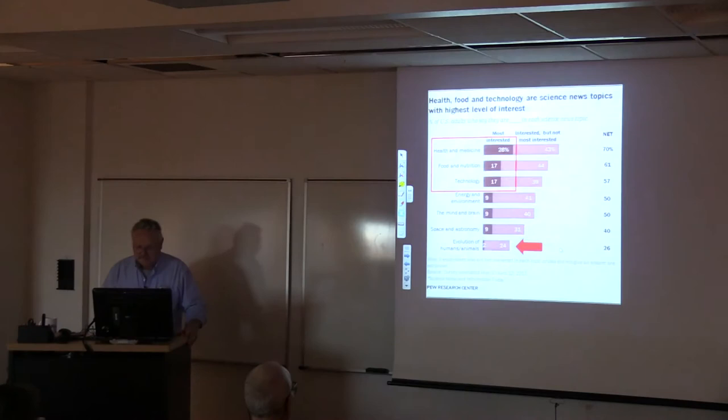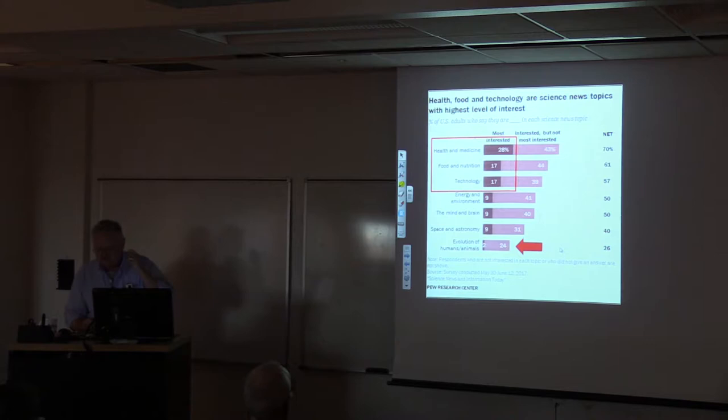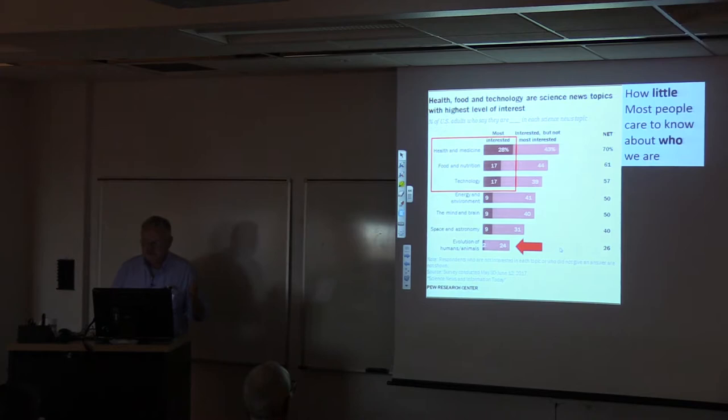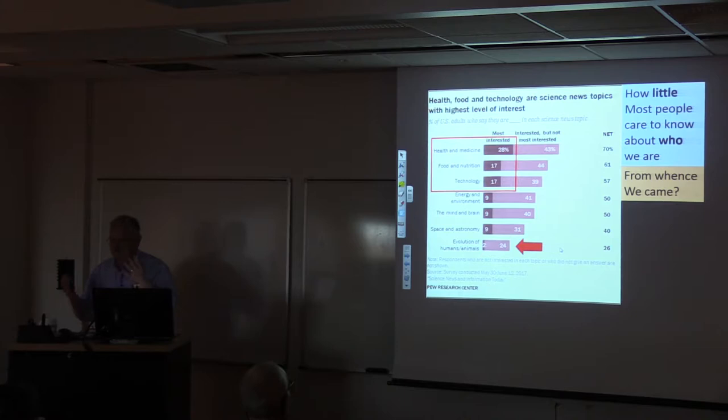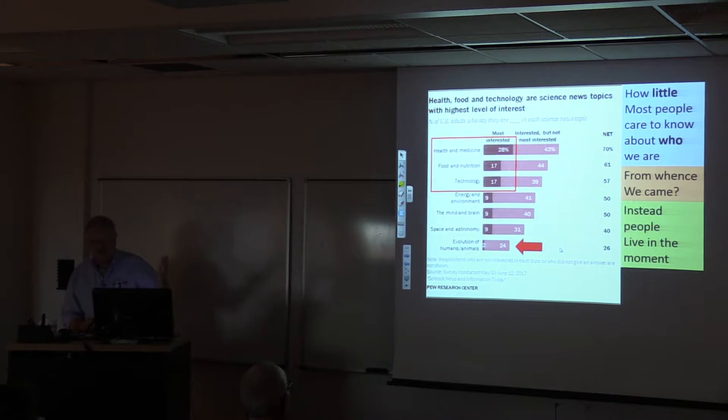The Pew Research Center shows what's interesting in terms of science topics for the public. A lot of people will read health and medicine, food and nutrition, some technology. But way down at the bottom is evolution of humans and animals. Like 2% of people care about that. That's kind of amazing because that's not caring about who we are. It's just assuming that humans were always the same. But a lot of us find it interesting that many of us carry around these genes from Neanderthals. There's even another group called Denisovans. It's kind of interesting to me that there's so little interest from whence we came as a species. Instead, people seem to live just in the moment.